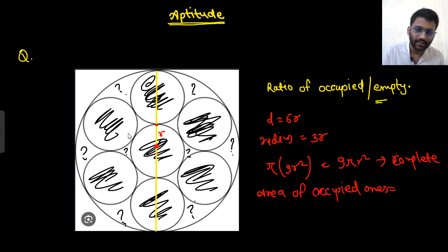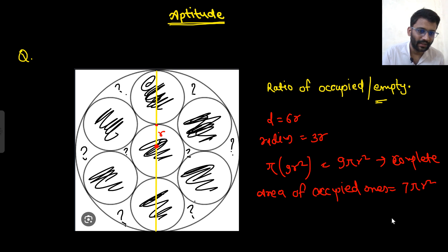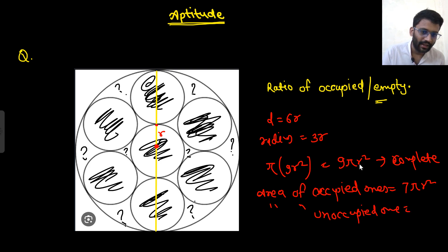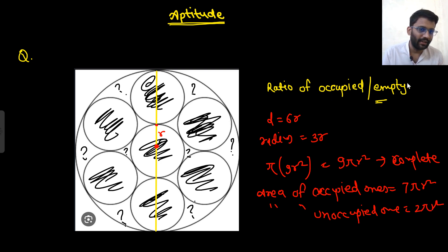There are 7 circles — 3, 3, and 1 — so the occupied area is 7πr². The unoccupied area is 9πr² minus 7πr², which equals 2πr². Therefore, the ratio of occupied to empty is 7:2. That is the answer.